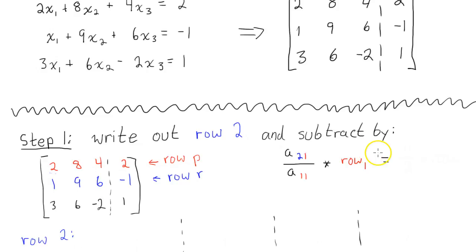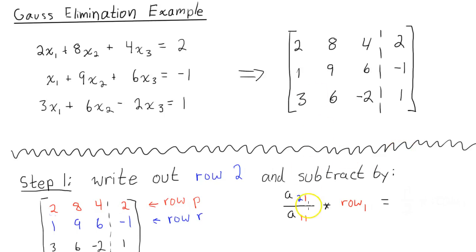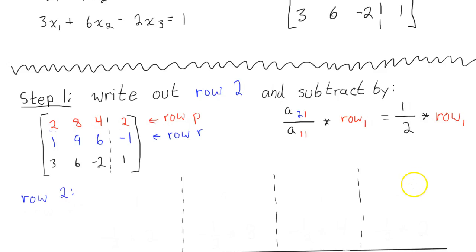And let's see what that will be, so if we come up here, A sub 2, 1, so row 2, column 1 will be 1, over A sub 1, 1, that's just 2, times each element of row 1. So I'll just say row 1.